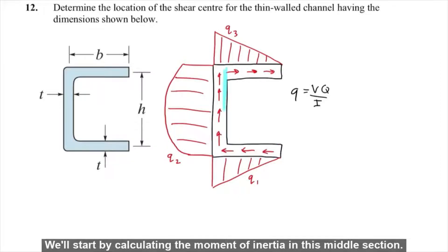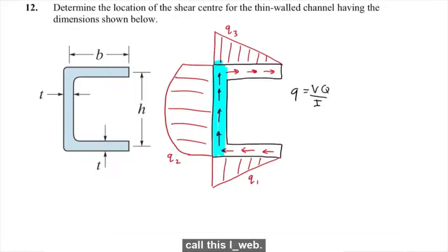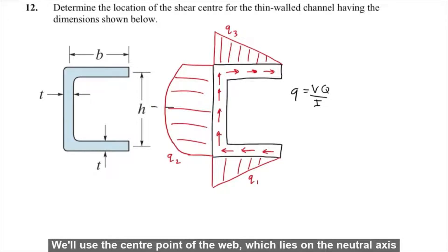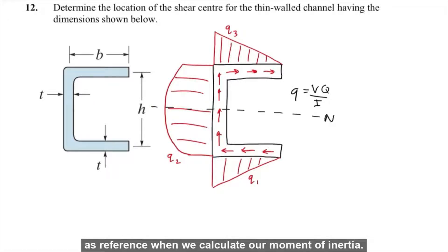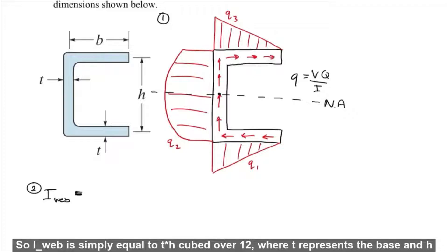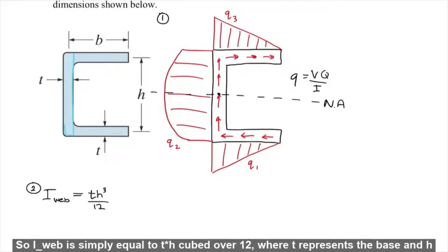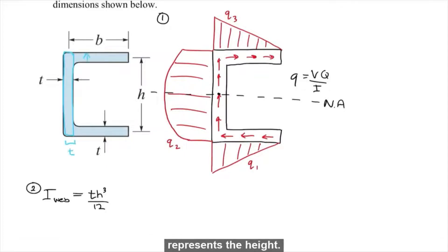We'll start by calculating the moment of inertia in this middle section. This middle section is also known as the web of the channel, so we'll call this I web. We'll use the center point of the web, which lies on the neutral axis, as reference when we calculate our moment of inertia. This section is already symmetric along the neutral axis, so we can simply use the moment of inertia equation for a rectangle. So I web is simply equal to TH cubed over 12, where T represents the base and H represents the height.